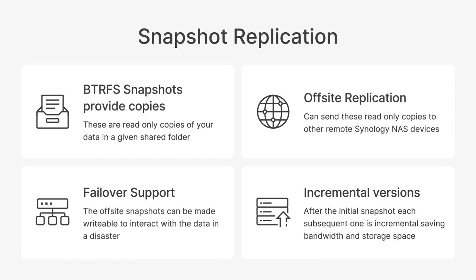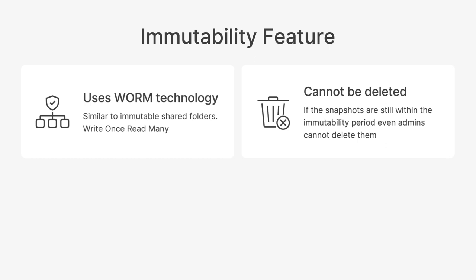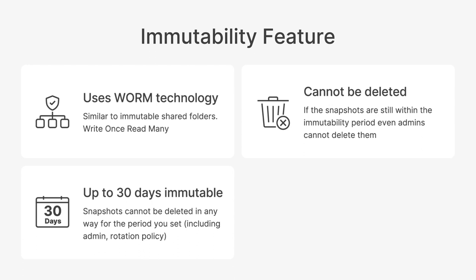The immutable feature is an extension of the snapshot replication package. It uses WORM technology similar to the write-once-read-many shared folder feature, and snapshots cannot be deleted within the immutable period — as long as those snapshots are locked, they cannot be deleted for any reason by anyone. You can set this immutable period to be up to 30 days, and other snapshot features like rotation and retention are also supported after that immutable period has expired.